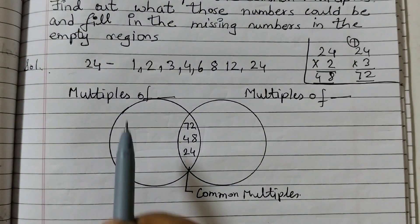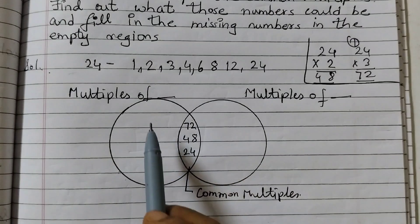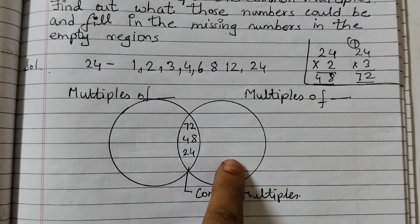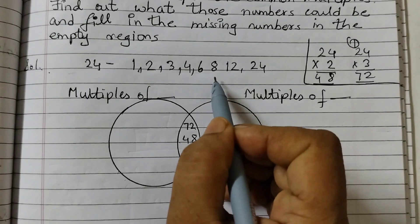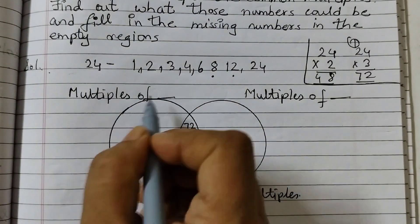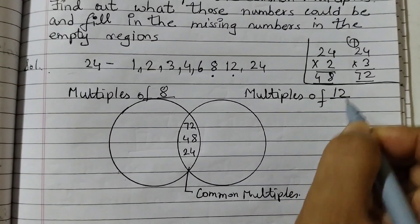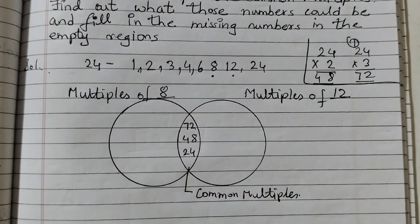I will go for the bigger numbers because if I take 2 and 3, writing the multiples will just fill up the circle and take up a lot of space. I will go for 8 and 12. Multiples of 8 I am going to write here, multiples of 12 I would write here, and let's see how it works out.